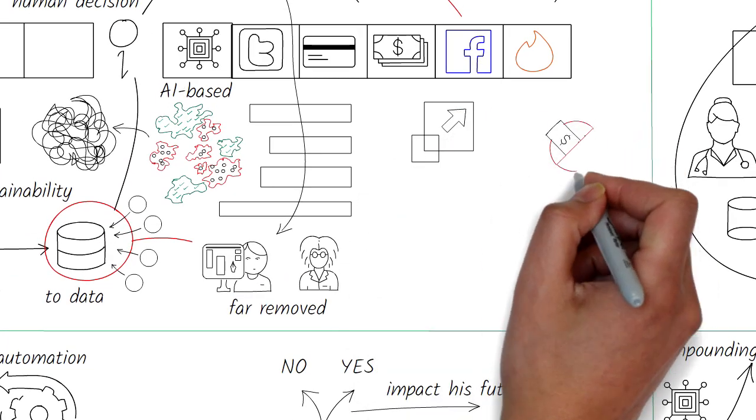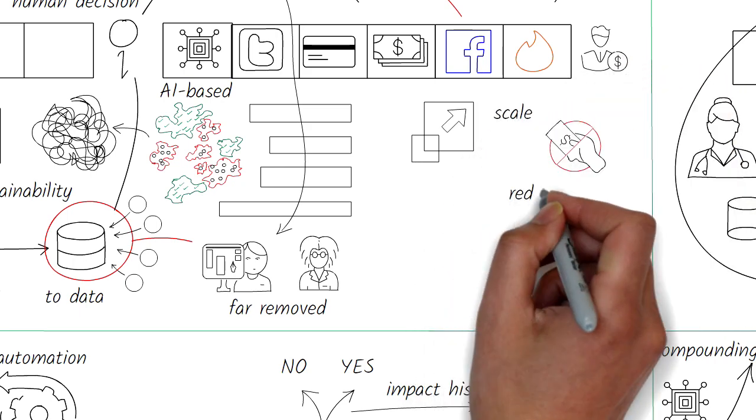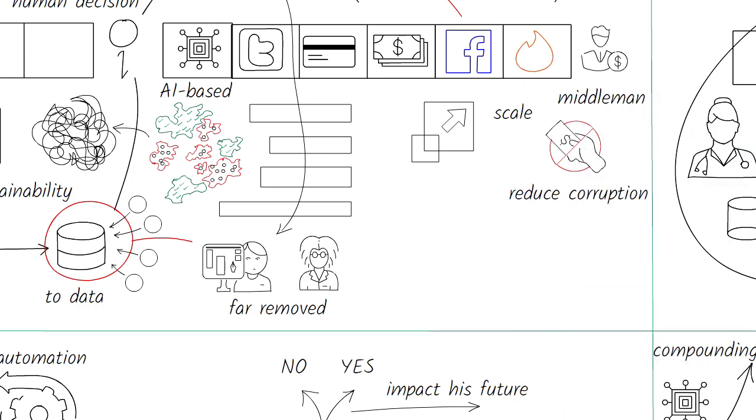On the other hand, algorithms are also hugely beneficial because they can scale and they can cut out the middleman. The benefits of that in many countries is that it reduces corruption since people in the middle cannot influence decisions made by taking bribes or asking for other favors.